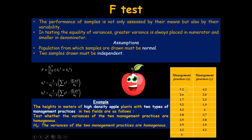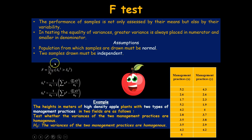The traditional formula for the f-test is simply the ratio of two variances: s1-squared divided by s2-squared. That is why it is known as the variance ratio test. For example, to test whether the variances of two management practices for high-density apple plants are homogeneous — the null hypothesis is that the variances of the two management practices are homogeneous.